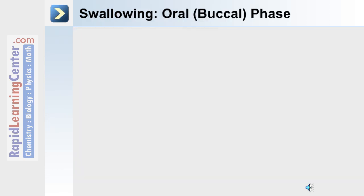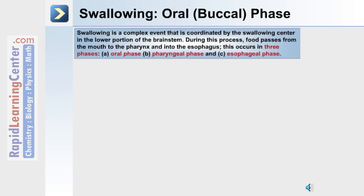Now let's describe the processes involved in swallowing. This is a complex event coordinated by the swallowing center in the brain stem, during which food passes to the pharynx, into the esophagus, and eventually into the stomach. Swallowing can be divided into three phases: the oral phase or buccal phase, the pharyngeal phase, and the esophageal phase.